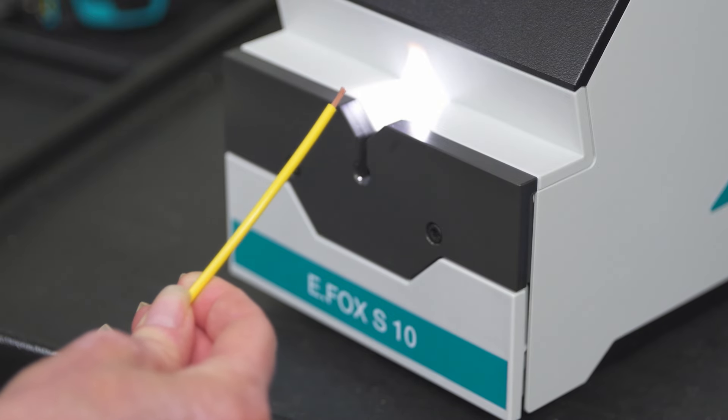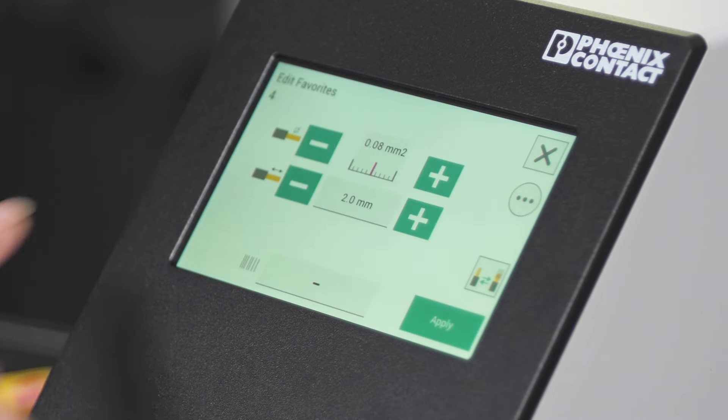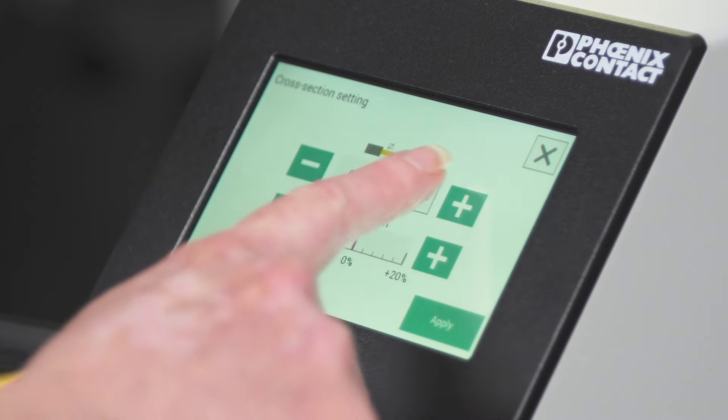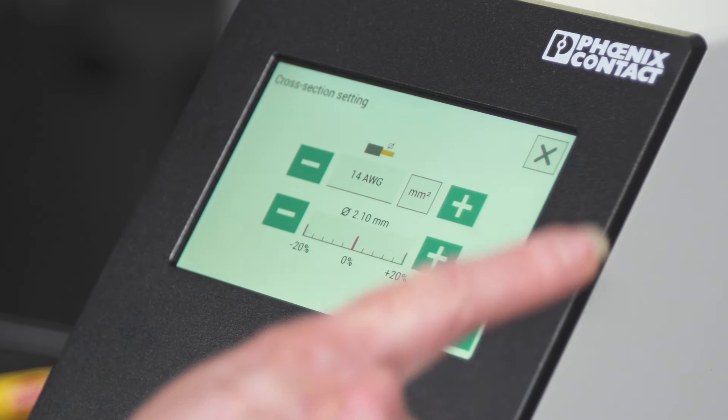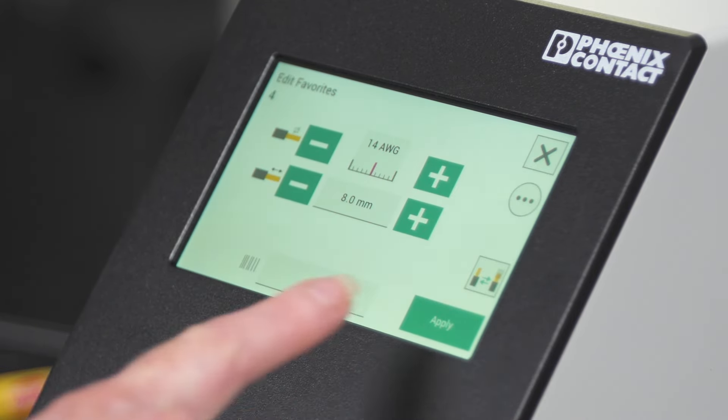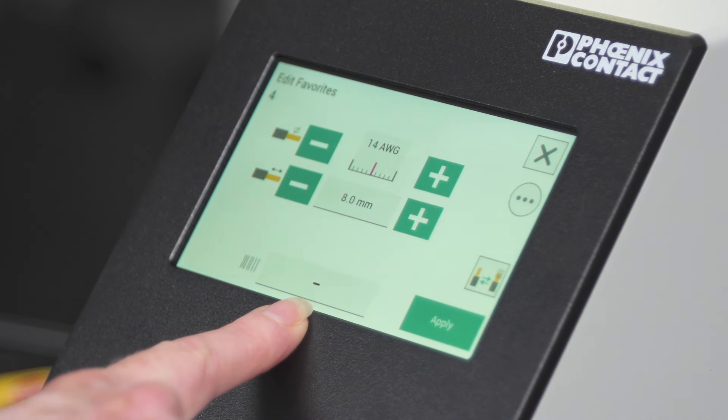Specific jobs can be saved through the touchscreen. Touch on the star and this screen will appear. Select the job number and enter the strip specifications, then touch on apply. On the bottom here, you see the barcode symbol. This is where you can enter a job number to quickly recall specifications later using a barcode scanner.